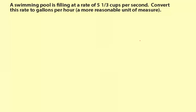A swimming pool is filling at a rate of five and one-third cups per second. Convert this rate to gallons per hour, which is a more reasonable unit of measure. Cups per second is hard to visualize, but gallons per hour does make more sense — it's probably a better unit to talk about this rate with. So I'm going to write the rate first: five and one-third cups per one second. We want to convert this to gallons per hour.